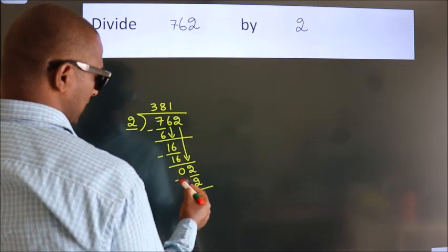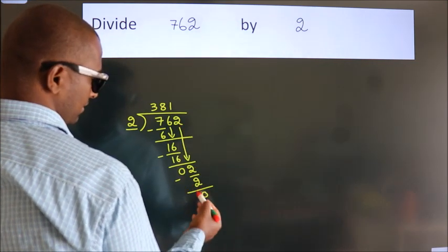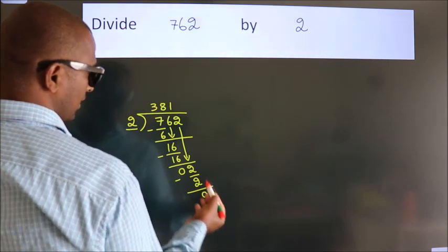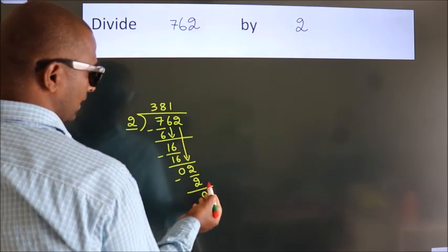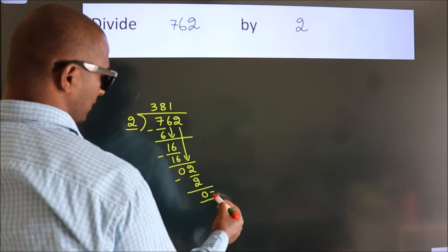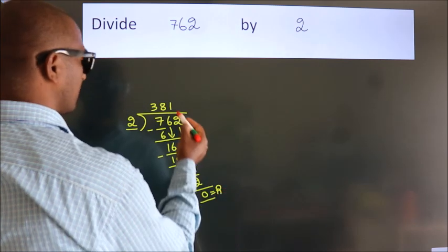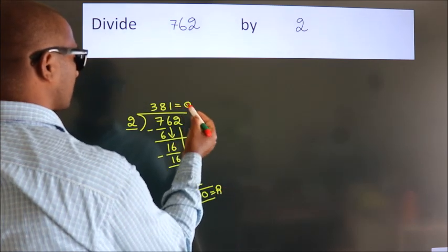Now we subtract. We get 0. After this, no more numbers to bring down. So we stop here. This is our remainder. This is our quotient.